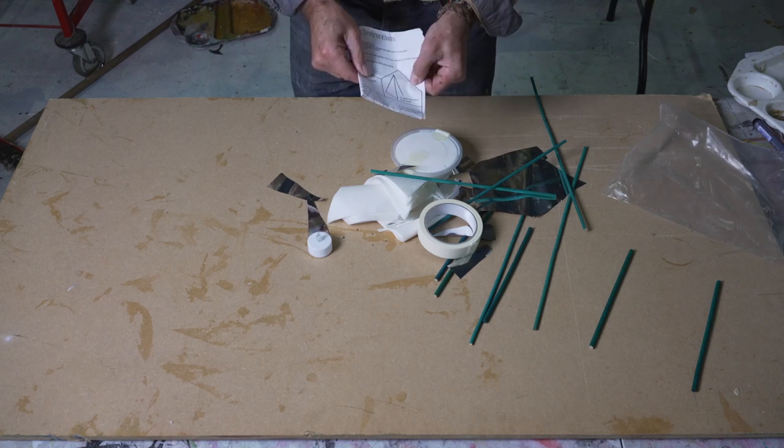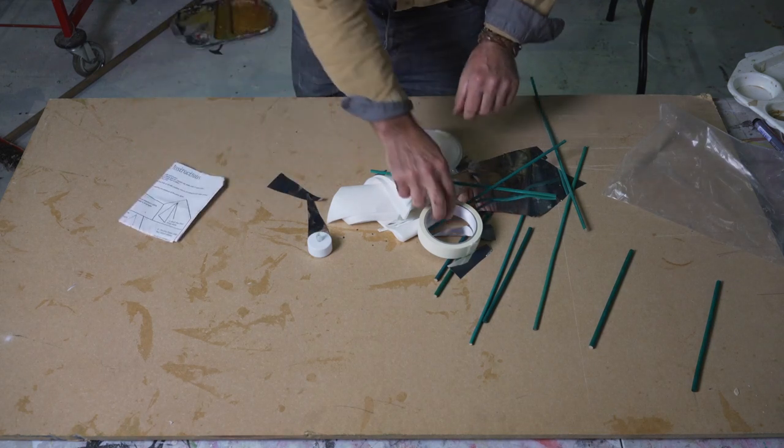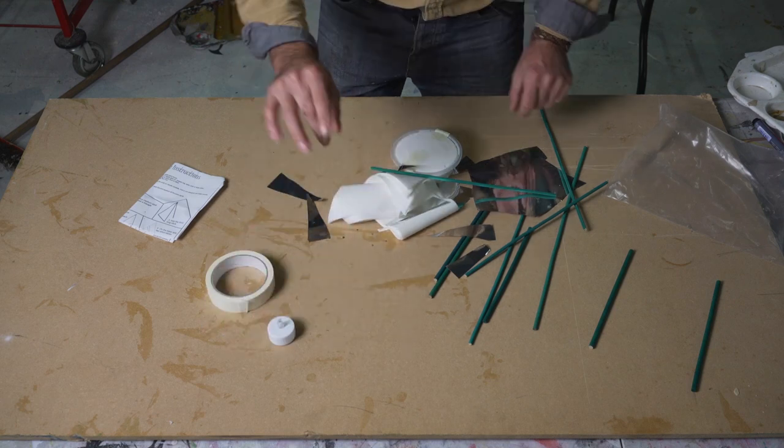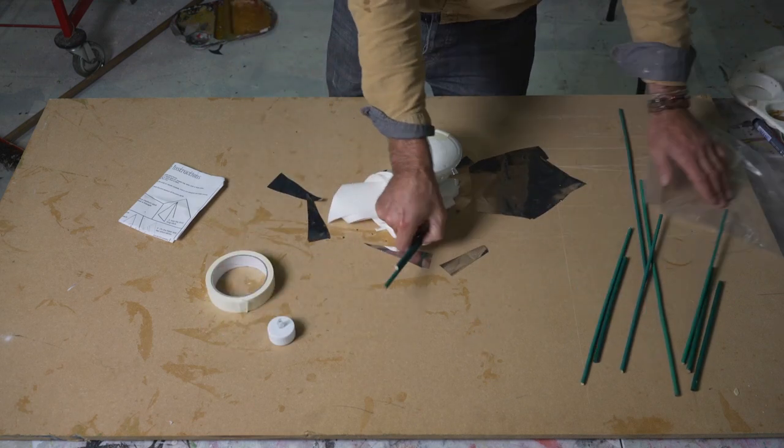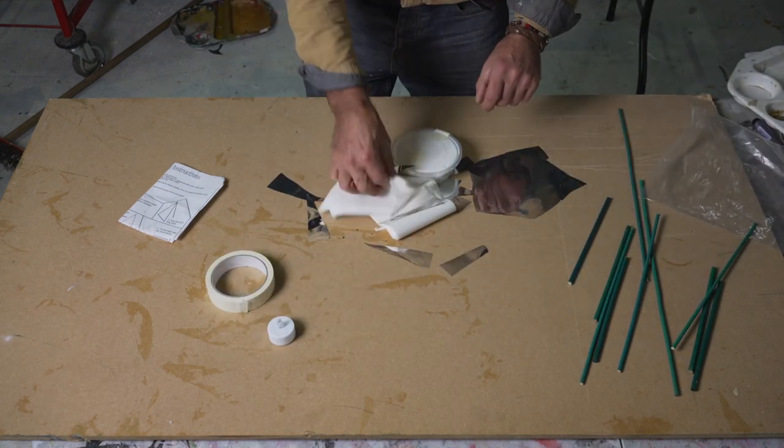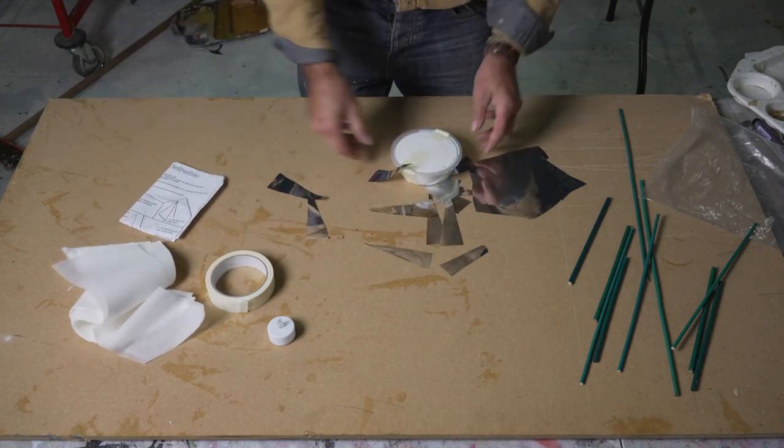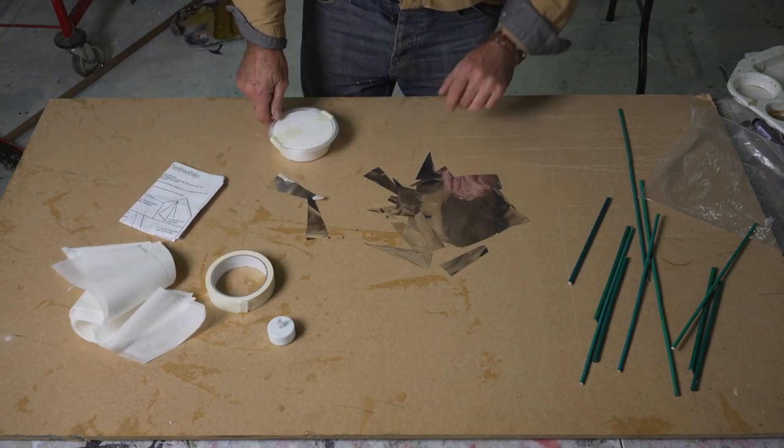There are written instructions as well which you can follow. One roll of masking tape, one tea light, a number of sticks, some tissue paper, PVA glue, and some silver stuff.